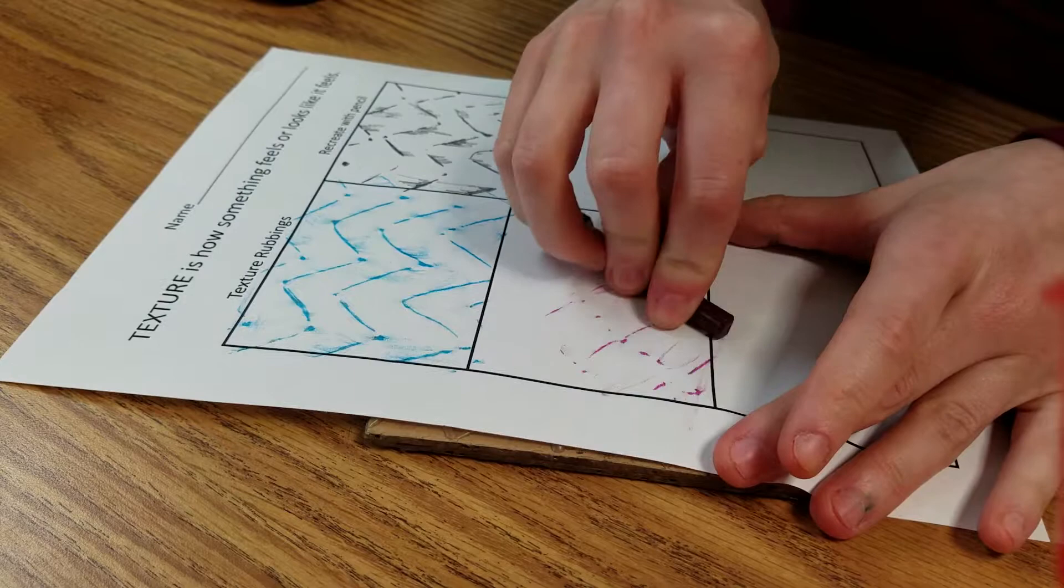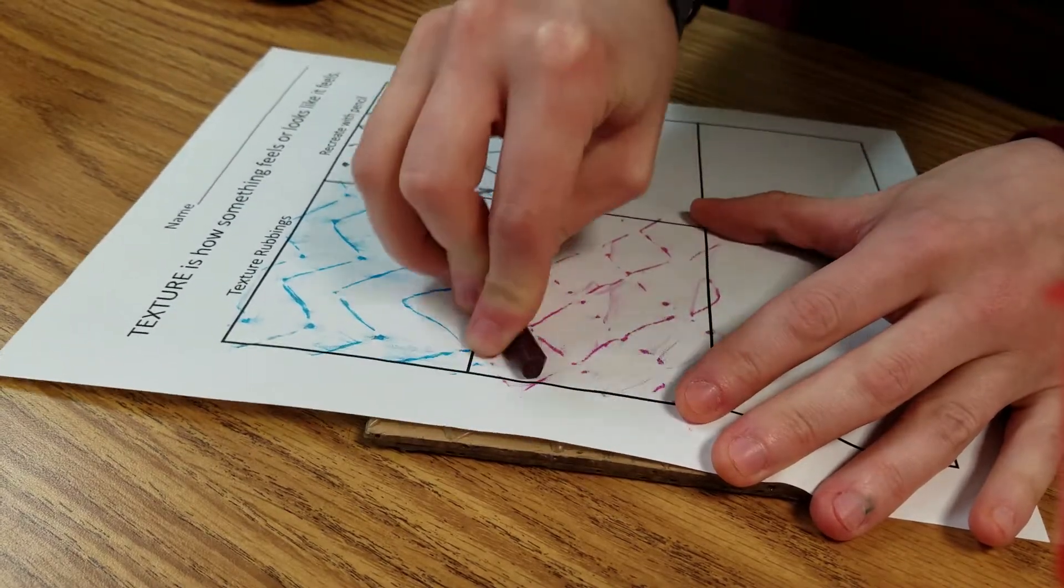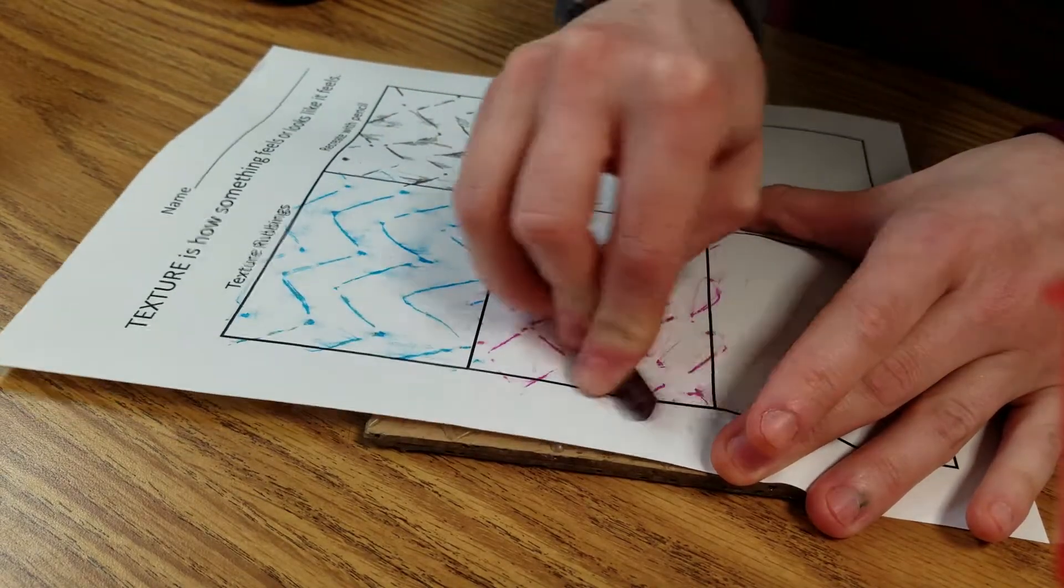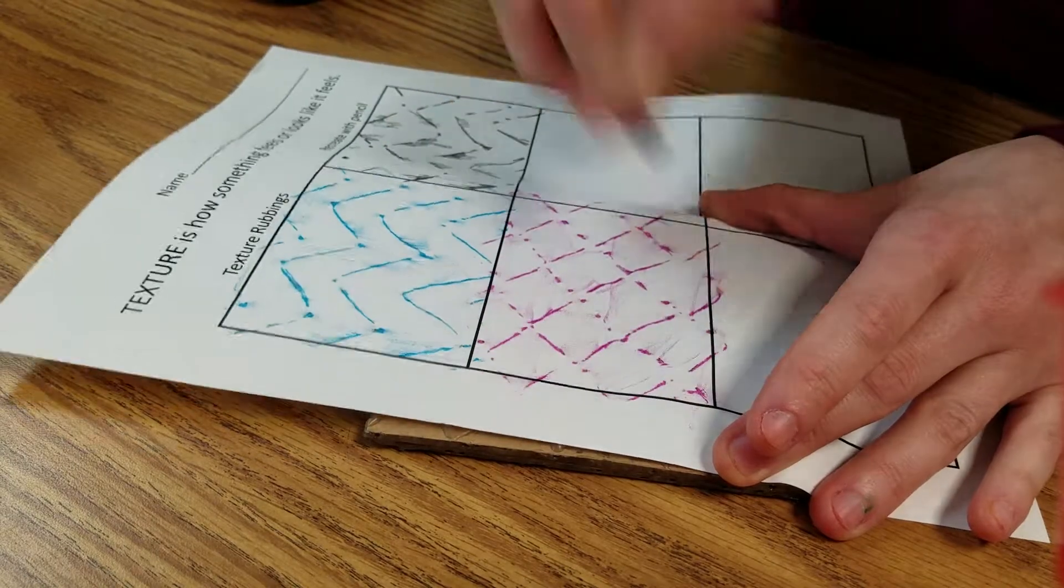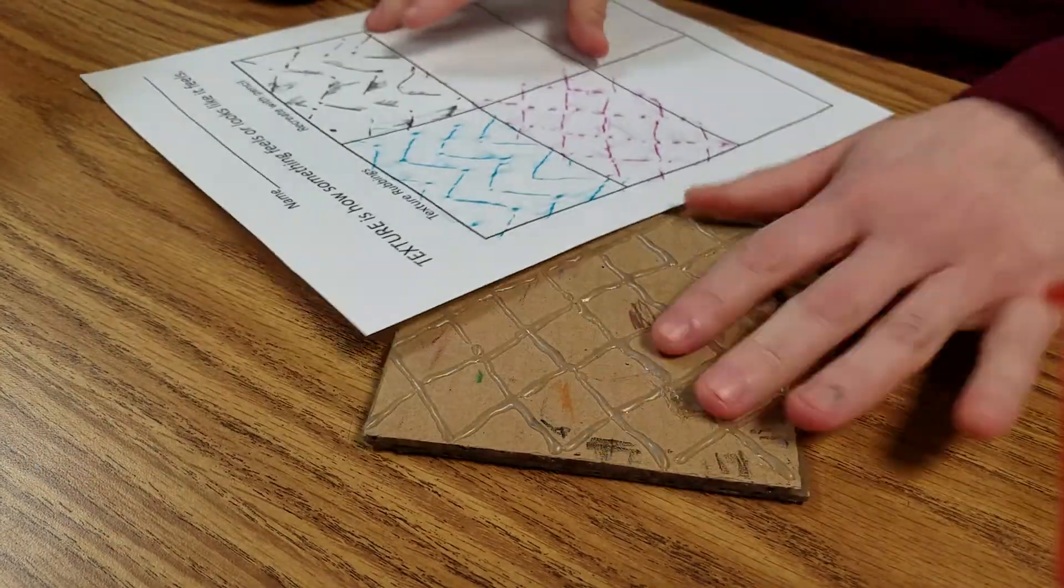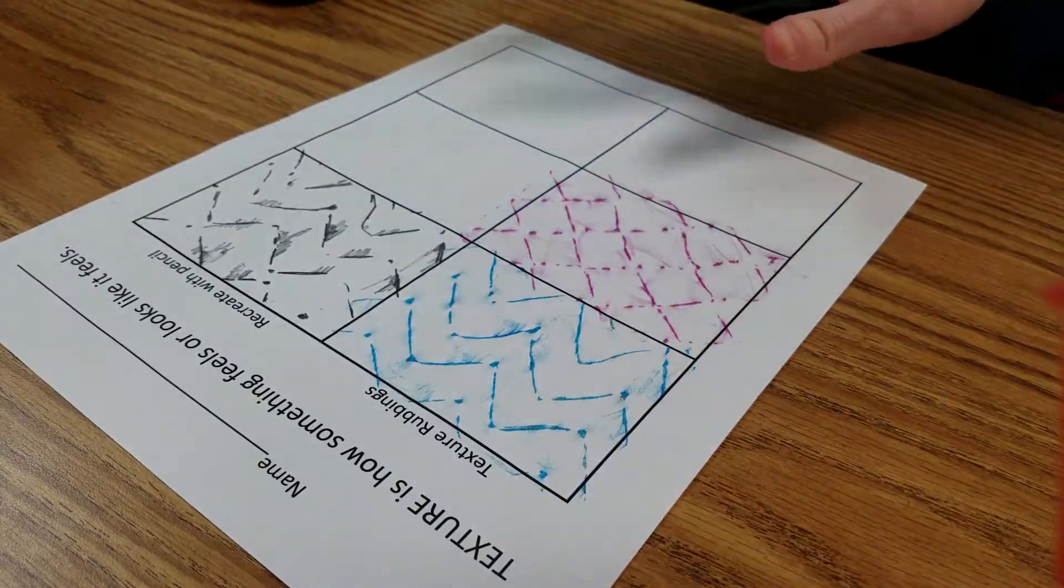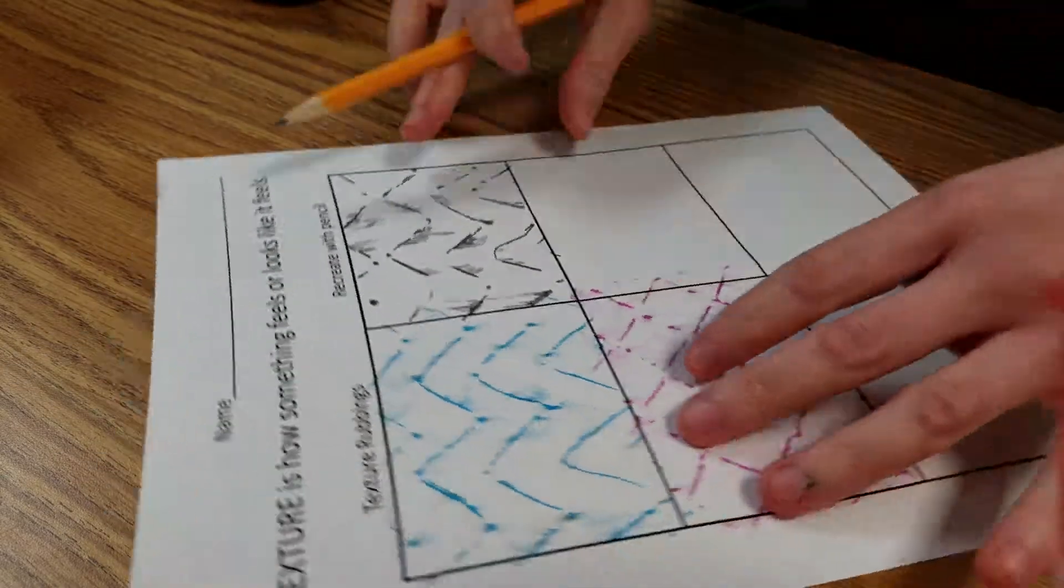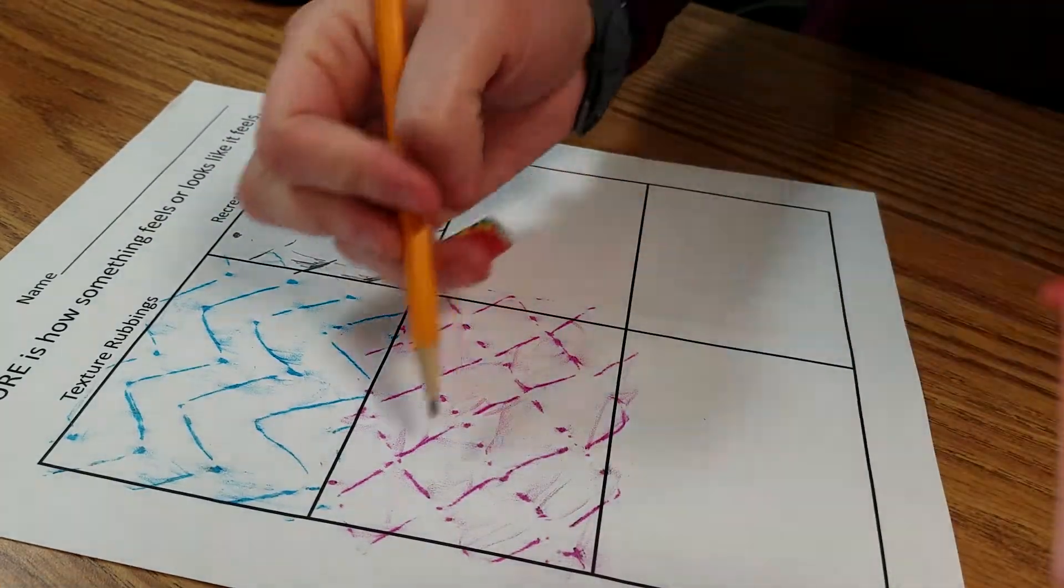And then you would get your pencil and on this side you would start to recreate this. Okay, so I'm going to start with the darker lines first.